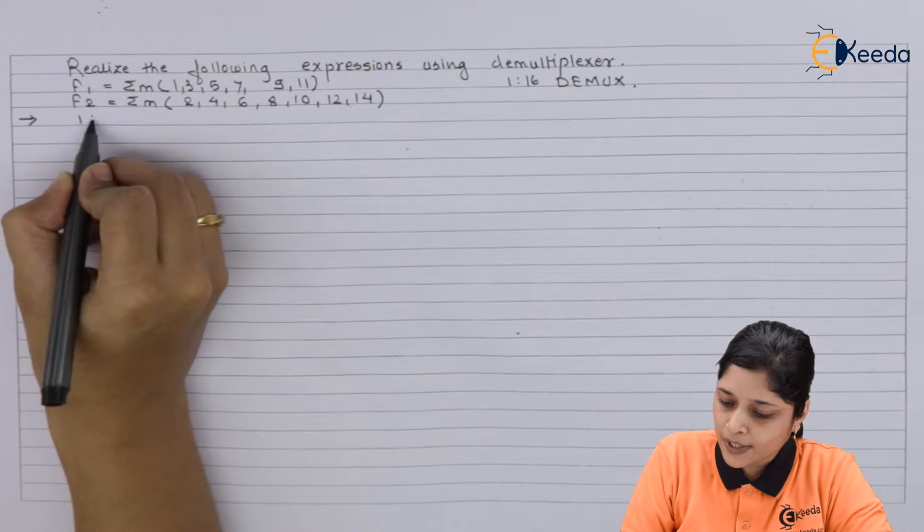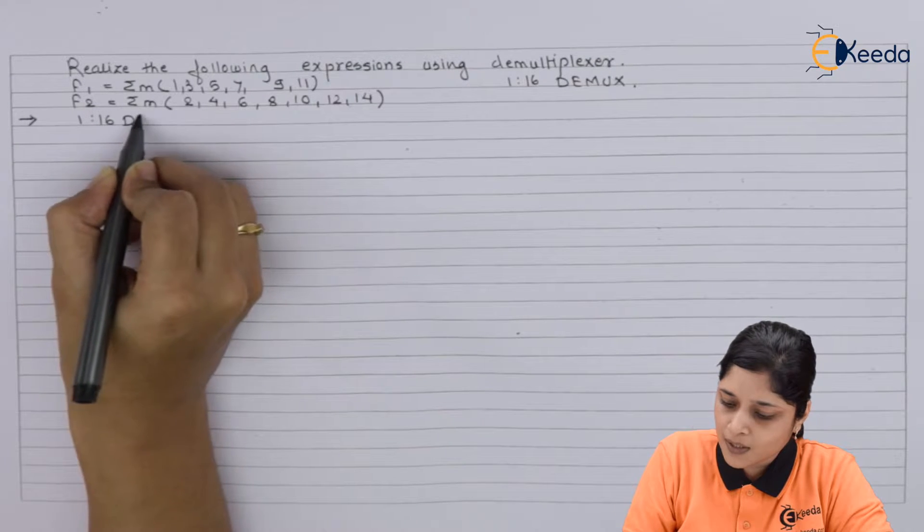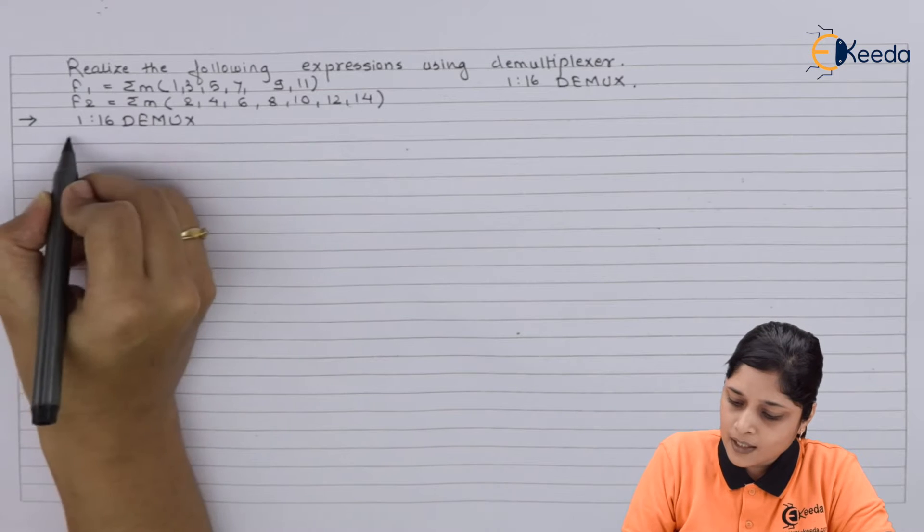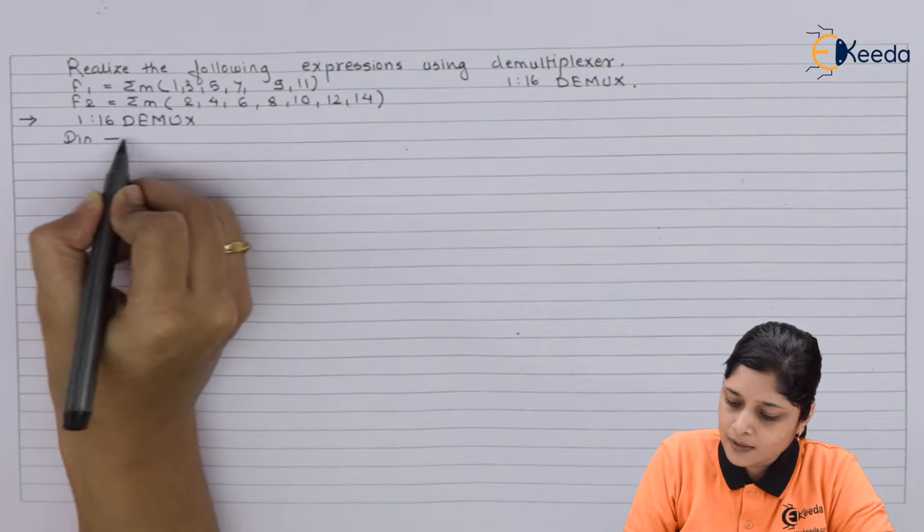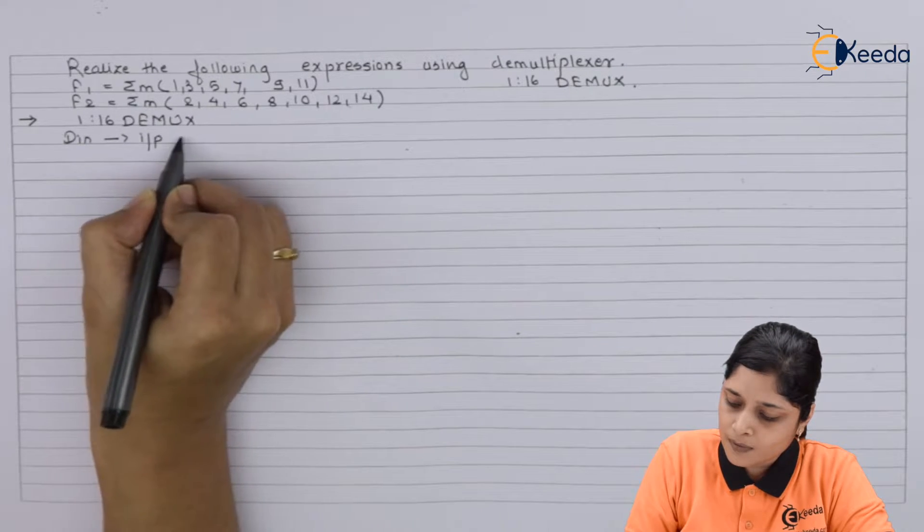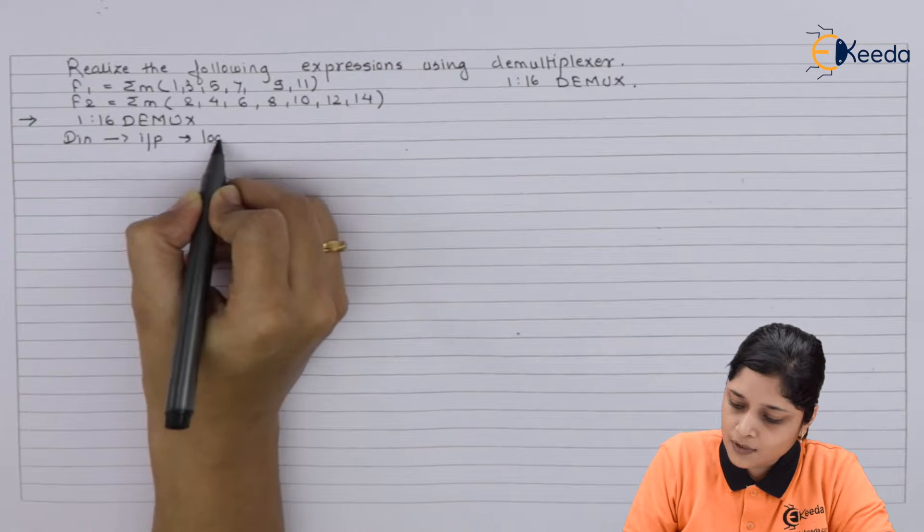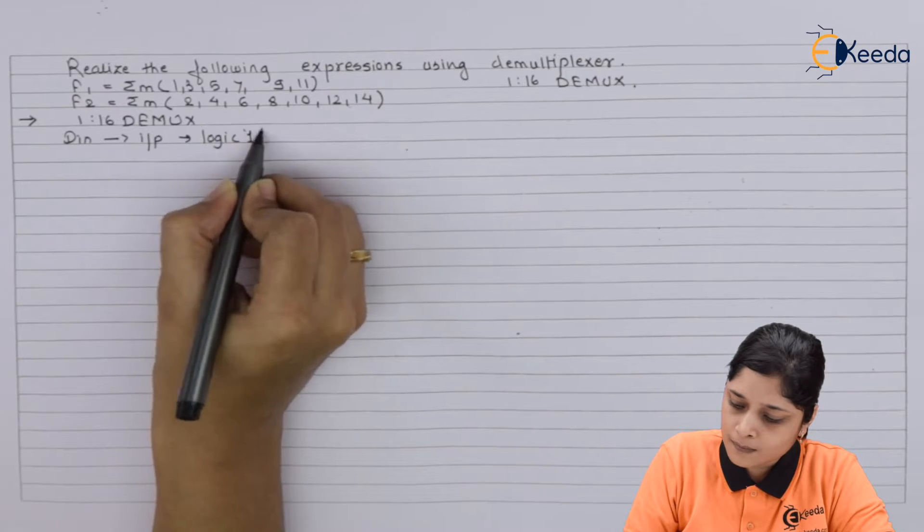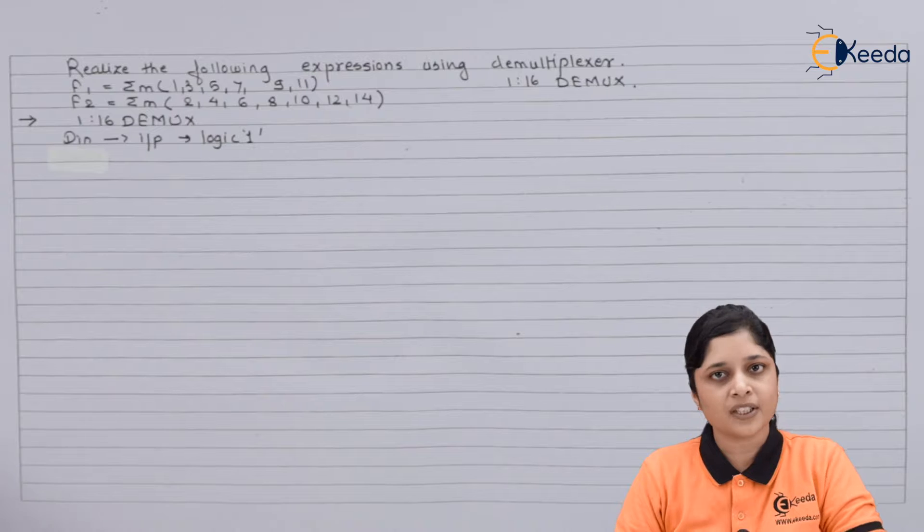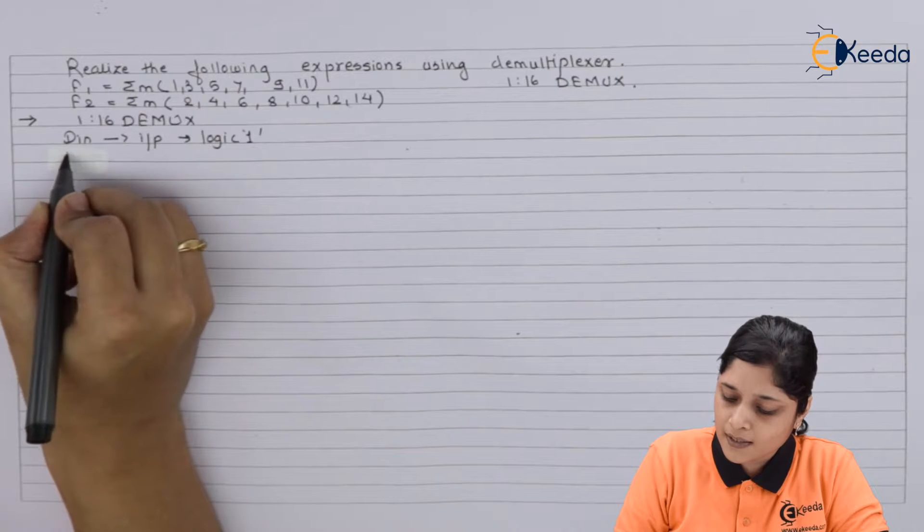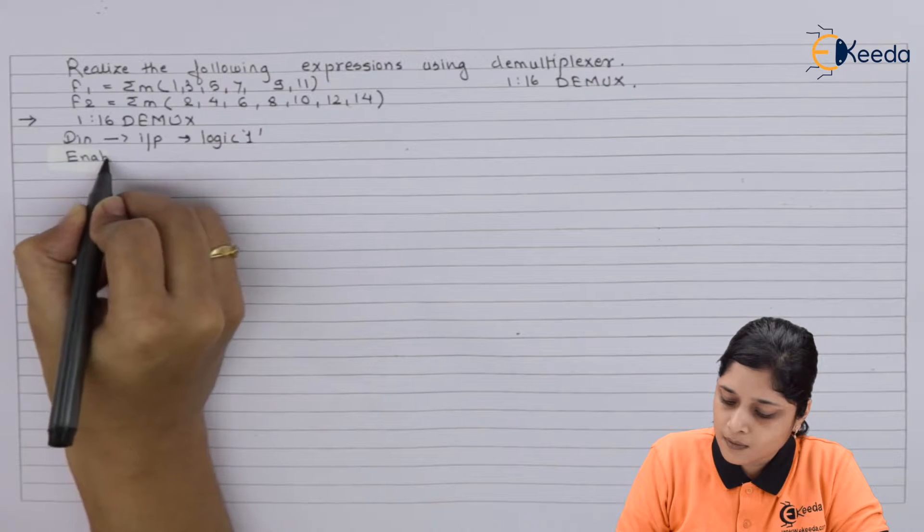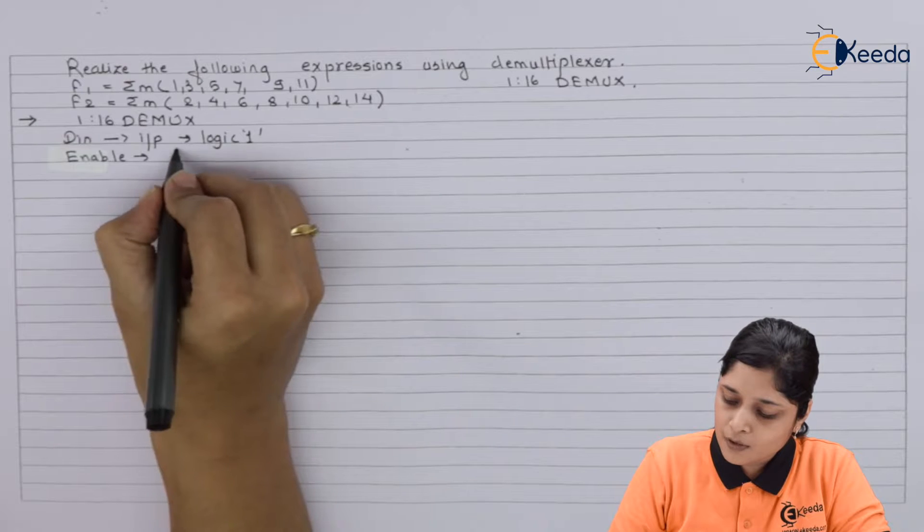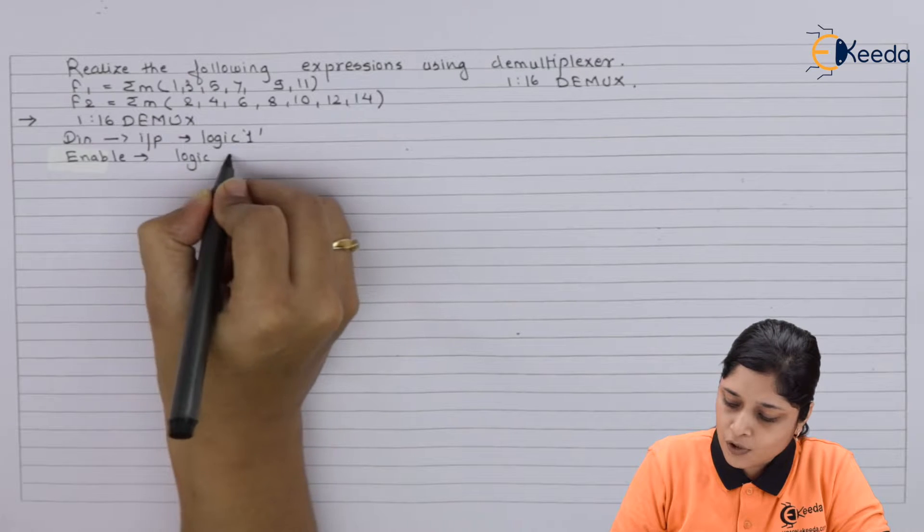Important points we are going to write here: 1 to 16 DEMUX. Din is the input - we have to always connect it to logic 1. Then after that, next terminal is enable - it is also connected to logic 1.